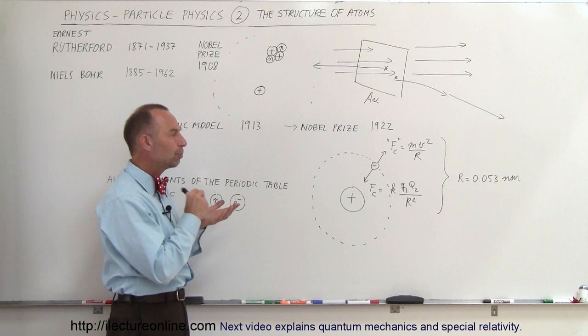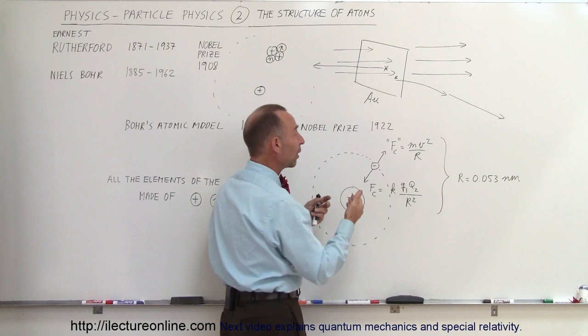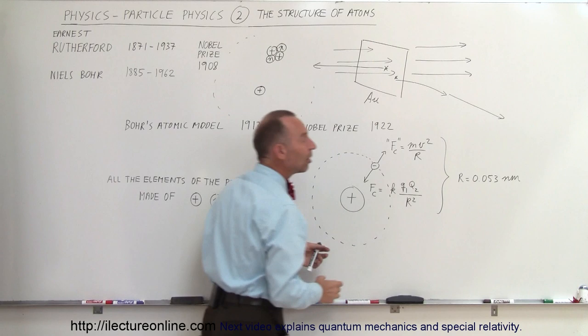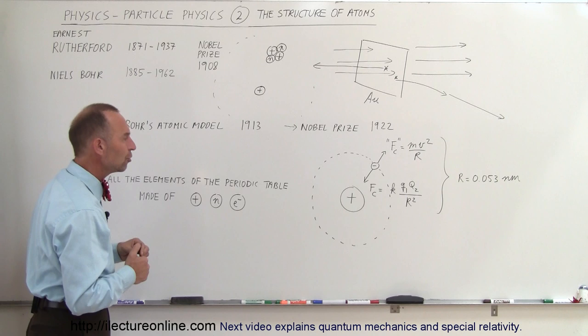So Niels Bohr calculated that and he said the Coulomb equation, the force between charged particles which is defined by this equation, and the centripetal equation or the centrifugal equation, he set those two equations equal and from that he was able to figure out the size of an atom, the size of the radius of a hydrogen atom. And so he knew that the radius was 0.053 nanometers, or 0.53 angstroms, what they used back in the days.